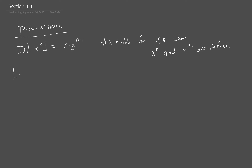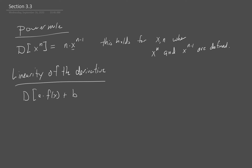Another rule is linearity of the derivative, and this combines a couple of rules. I'm going to take the derivative of a constant a times a function f of x plus another constant b times a function g of x. The linearity says the constant can be pulled out, and then I can do the derivative of each of the pieces with the plus sign in between them. So I take a times the derivative of f plus b times the derivative of g.